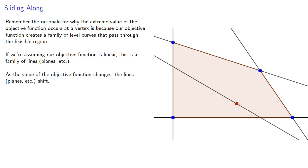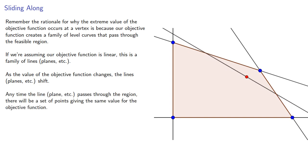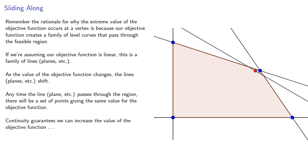As the value of the objective function changes, the lines, planes, whatever shift. And any time the line, plane, whatever passes through the region, there will be a set of points giving the same value for the objective function. Continuity guarantees we can increase the value of the objective function until it passes through a vertex.